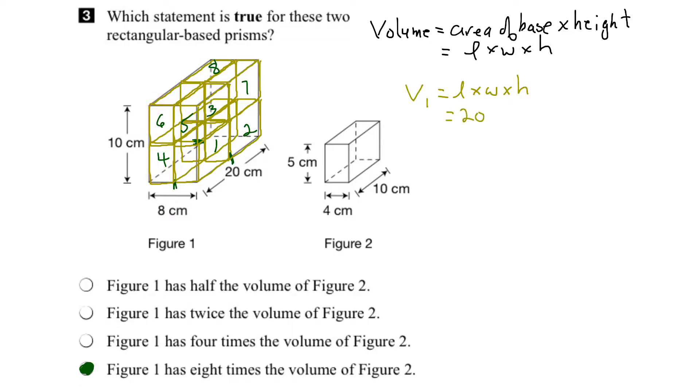And we multiply those together. 20 times 8 is 160 times 10 is 1600. And the units would be centimeters cubed.